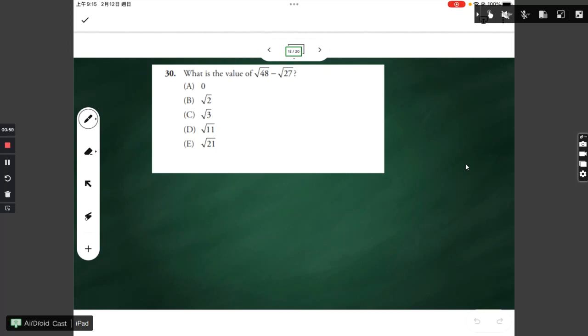Converting the square root of 48, we can rewrite that into the square root of 16 times 3. And then you have minus square root of 27, and we're going to rewrite square root of 27.